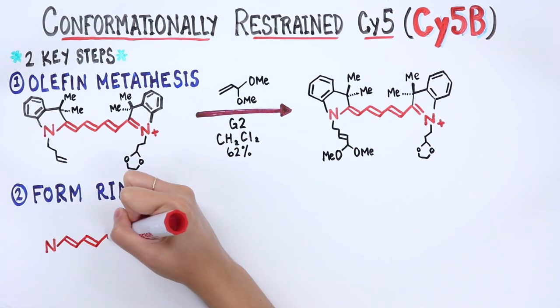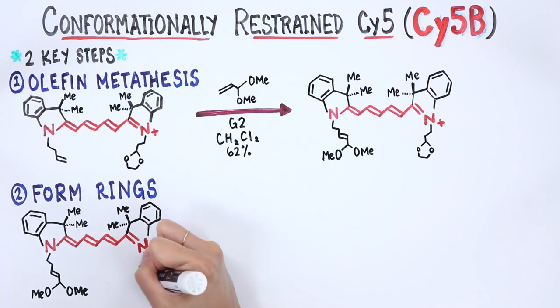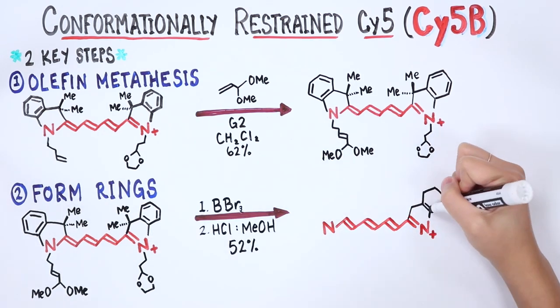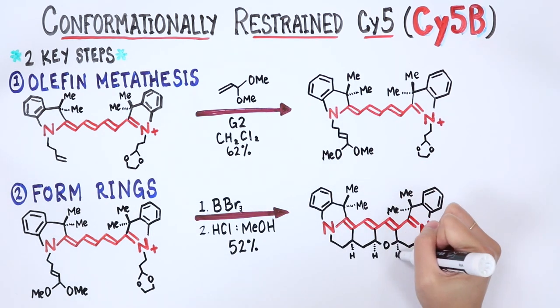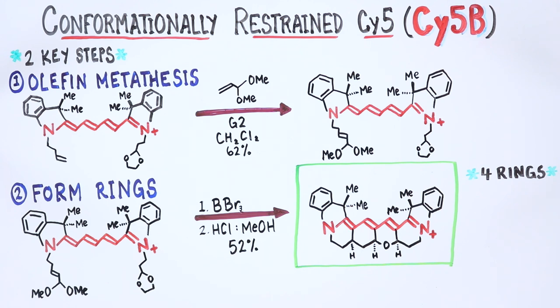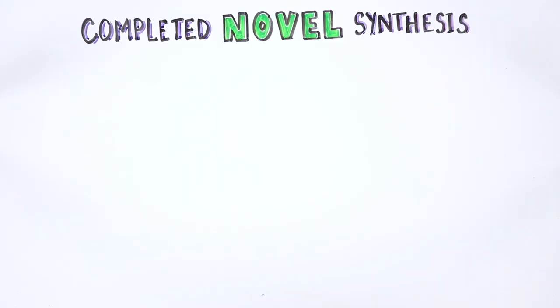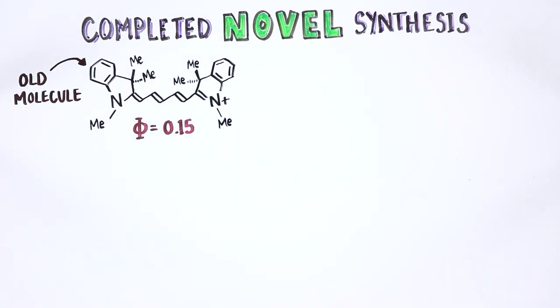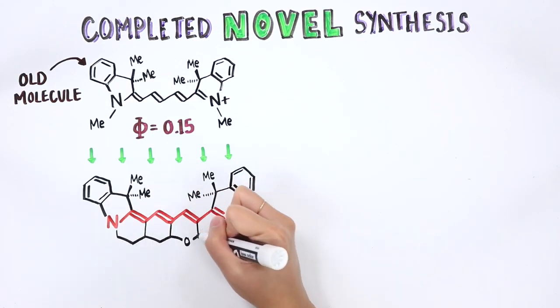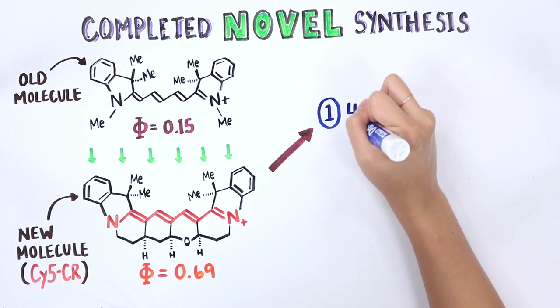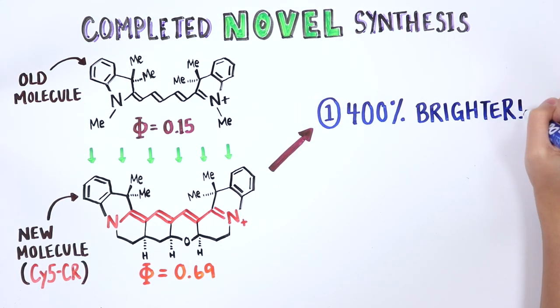In the second step, this precursor molecule is exposed to strongly acidic conditions, which drives the formation of four rings in a single step. This is an exciting chemical reaction because it involves forming five bonds, including two carbon-oxygen bonds and three carbon-carbon bonds, the latter of which are often hard to form. With this novel synthesis complete, we were delighted to discover that the addition of these new ring structures made the fluorophores over 400% brighter.